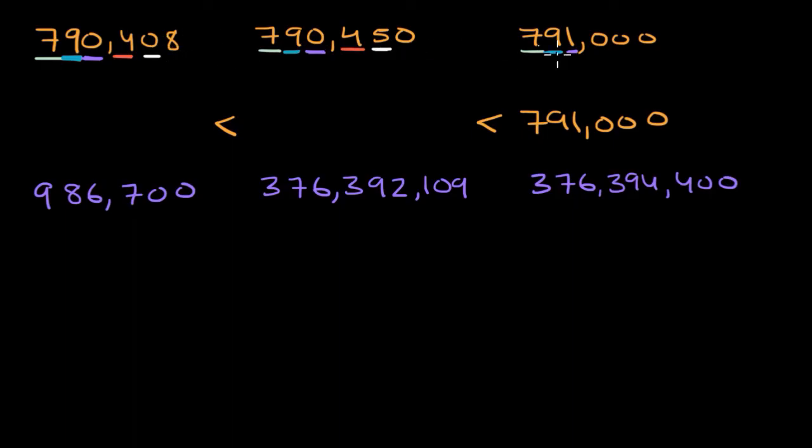So actually, it's already written in order from least to greatest. I could have just done that, but let me just write it this way again. 790,408 is less than - you could think of it as the small end of the sign points to the smaller number - is less than 790,450, which is less than 791,000.